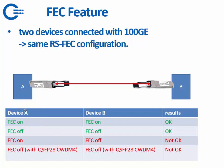If FEC is on on device A and off on device B, you will not have a link. Similarly, if FEC is off on both sides but the optic is a CWDM4, you also won't have a link, because that optic requires FEC to function.